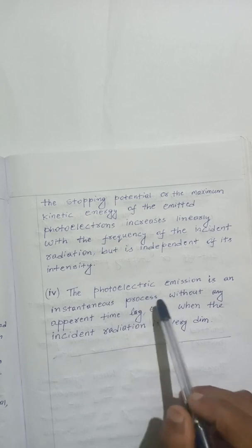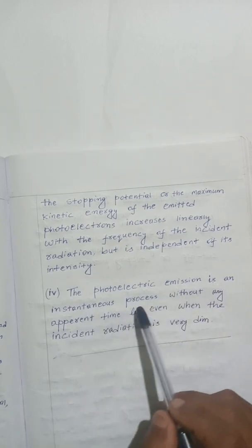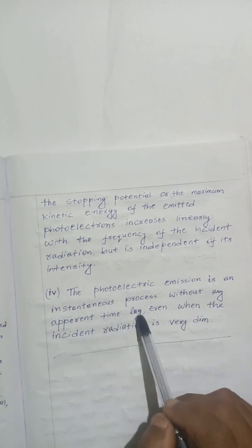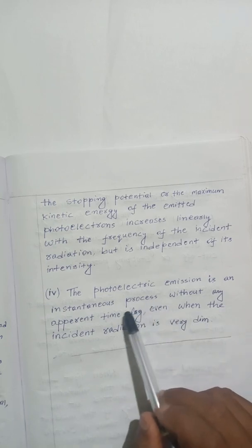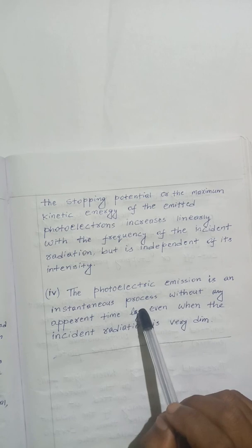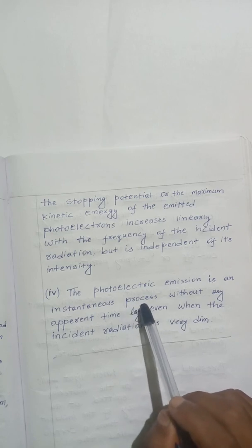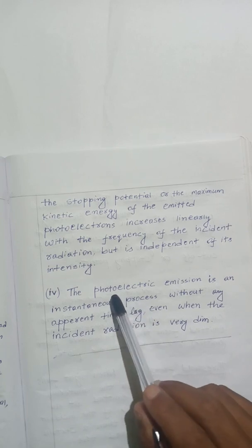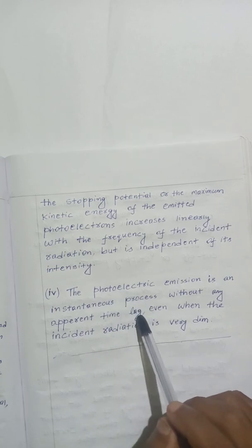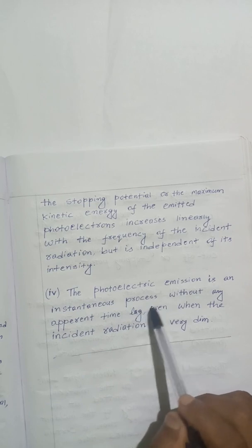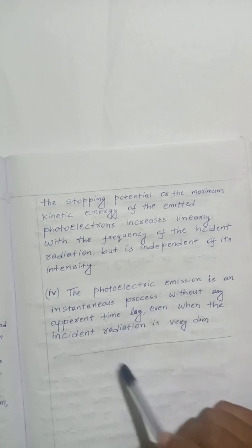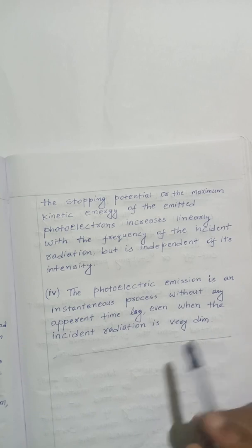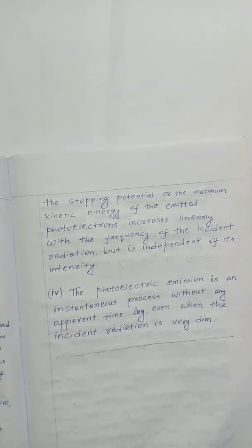The photoelectric emission is an instantaneous process without any apparent time lag, even when the incident radiation is very dim. That means as soon as light falls on the surface of the metal, electrons will be ejected from the surface of the metal, even when the intensity of the incident radiation is very dim. With this, I have come to the end and I hope that this video will help you all. Thank you.